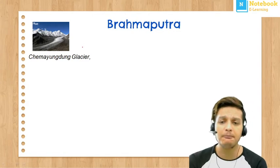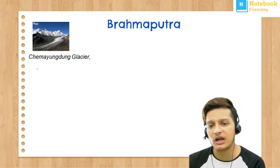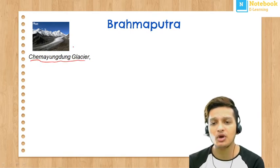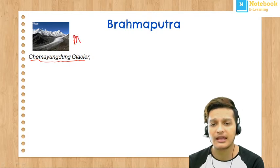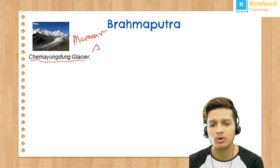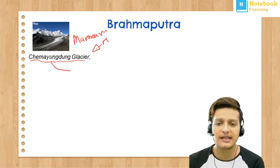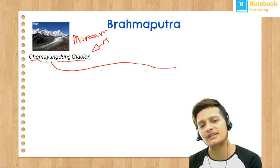The Brahmaputra river originates from the Chemayungdung Glacier. This glacier is located near Mansarovar Lake, and Mount Kailash is nearby. This is the origin of the Brahmaputra river, and from here it starts to flow.